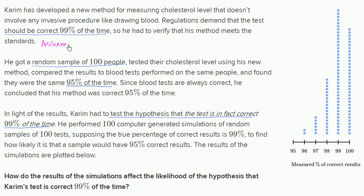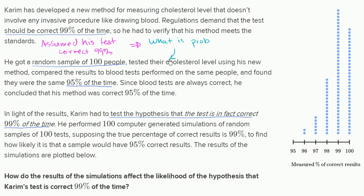If we assume the hypothesis that his test is correct 99% of the time, he's trying to figure out what's the probability that he gets these results. Because if this probability is really low, then he could say he really doesn't feel good about assuming this hypothesis — we can't go with the hypothesis if the probability of him seeing what he saw is very low given this assumption.